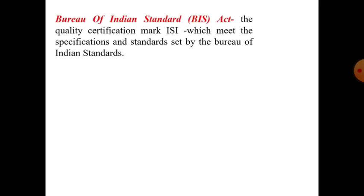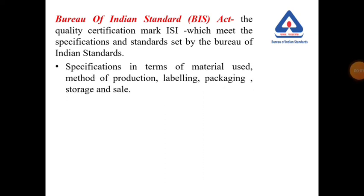Next is the Bureau of Indian Standards BIS Act. Under this act, the quality certification mark ISI is given to those products which meet the specifications and standards set by the Bureau of Indian Standards. The BIS gives specifications for products in terms of material used, methods of production, labeling, packaging, storage, and sale. Examples of products bearing the ISI mark are ghee, biscuits, detergents, pressure cookers, geysers, LPG cylinders, etc.